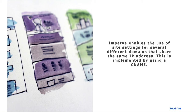When you reuse a CNAME, Imperva proxies make a public DNS query in order to find the host and resolve it to the original site. To reuse a CNAME, use the CNAME provided by Imperva for all relevant domains that you want to link under the same site configuration and policy used by the target record.